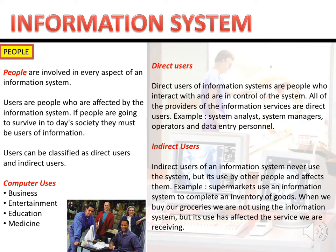People are involved in every aspect of the information system — we also call them users. Users can be classified as direct and indirect. A direct user is a person who uses the computer or system directly and affects the system — for example, a system analyst, data entry personnel, system managers, operators, and database administrators who key in records.